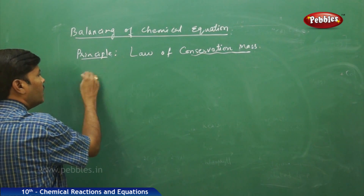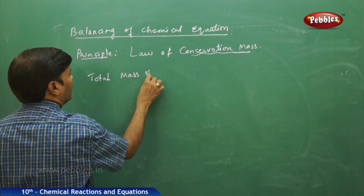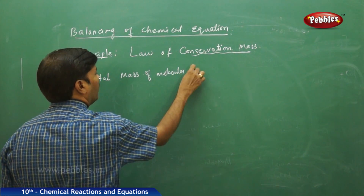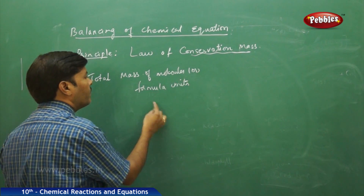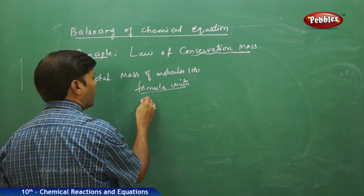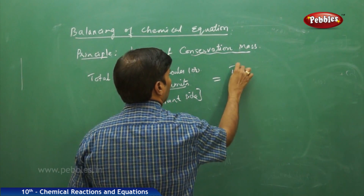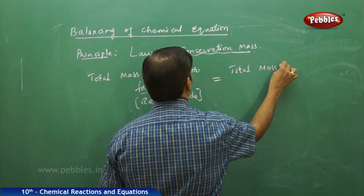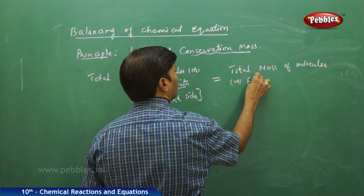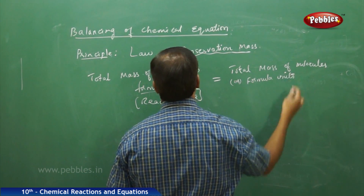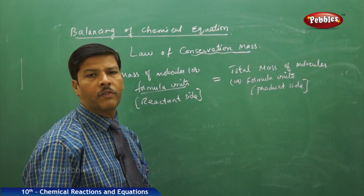For example, according to the law of conservation of mass, the total mass of molecules or formula units in the reactant side is always equal to the total mass of molecules or formula units in the product side. This is the meaning of the law of conservation of mass.